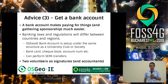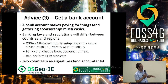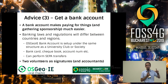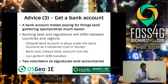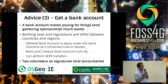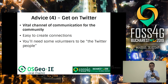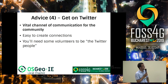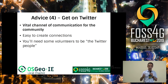Third: get a bank account. It makes things a lot simpler for dealing with sponsorship. Banking regulation differs between countries, but we're set up a bit like a university club or society — we have a bank card, checkbook account, need a couple of signatures for anything serious, and we need some volunteers to do the accounts at the end of the year. And number four, which we didn't do in the first year because we were so busy: get on Twitter as quickly as possible, because it's a vital source of communication and very easy to create connections. You'll need some people to be the Twitter people, as it requires keeping a watch quite frequently, particularly when related events are happening in the community.